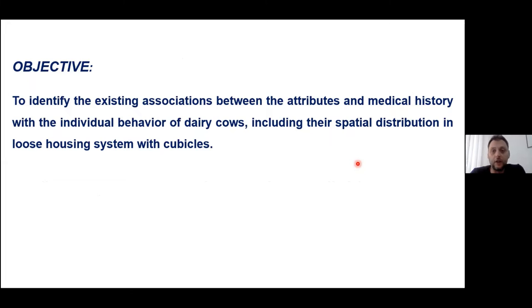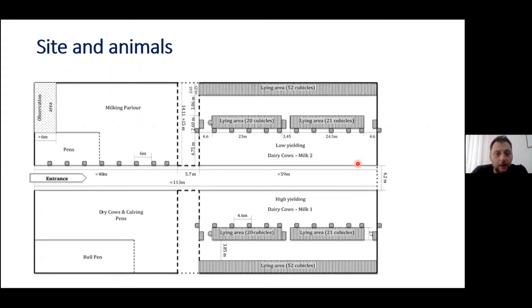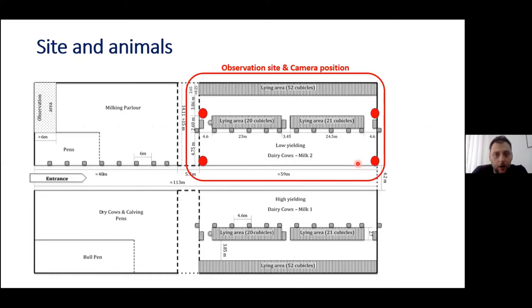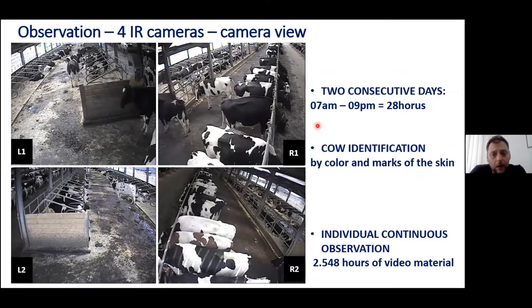The objective of this study was to identify existing associations between the attributes of the animal, the medical history of the animal, and the individual behaviors of those animals, including their spatial distribution in a loose housing system. For that purpose, we observed 91 lactating cows in a commercial farm with a freestyle system with more than 300 animals. All animals were enclosed in this area marked with the red rectangle, and these 91 cows were observed with cameras placed at the red dots.